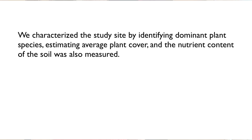For example, the following sentence presents a sequence that is not parallel: 'We characterized the study site by identifying dominant plant species, estimating average plant cover, and the nutrient content of the soil was also measured.' That structure fails to be consistent in describing how the study site was characterized. This structure is jarring to the reader because the flow of the sentence is disrupted by the use of inconsistent wording.